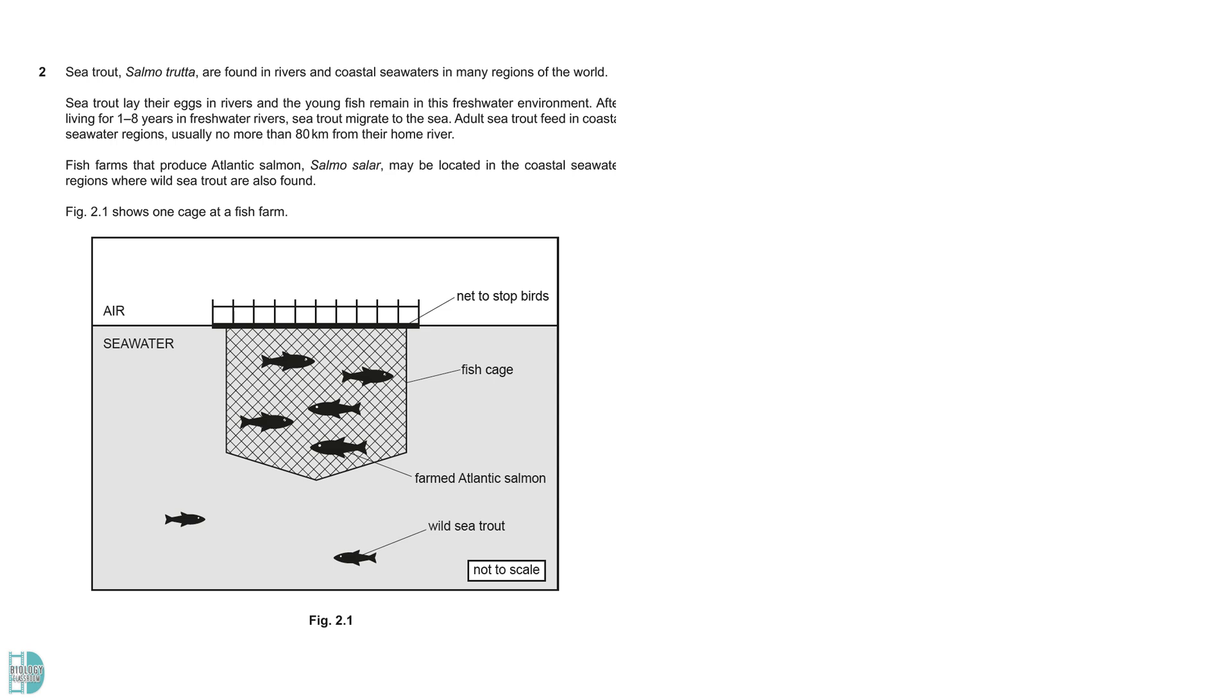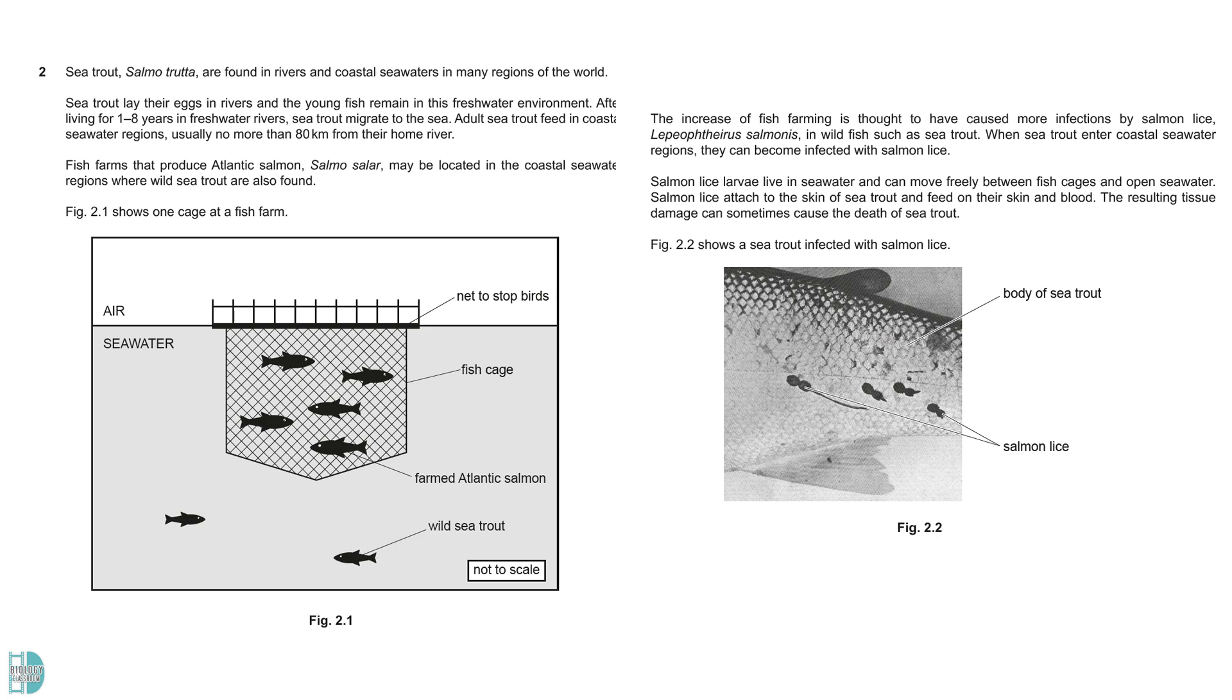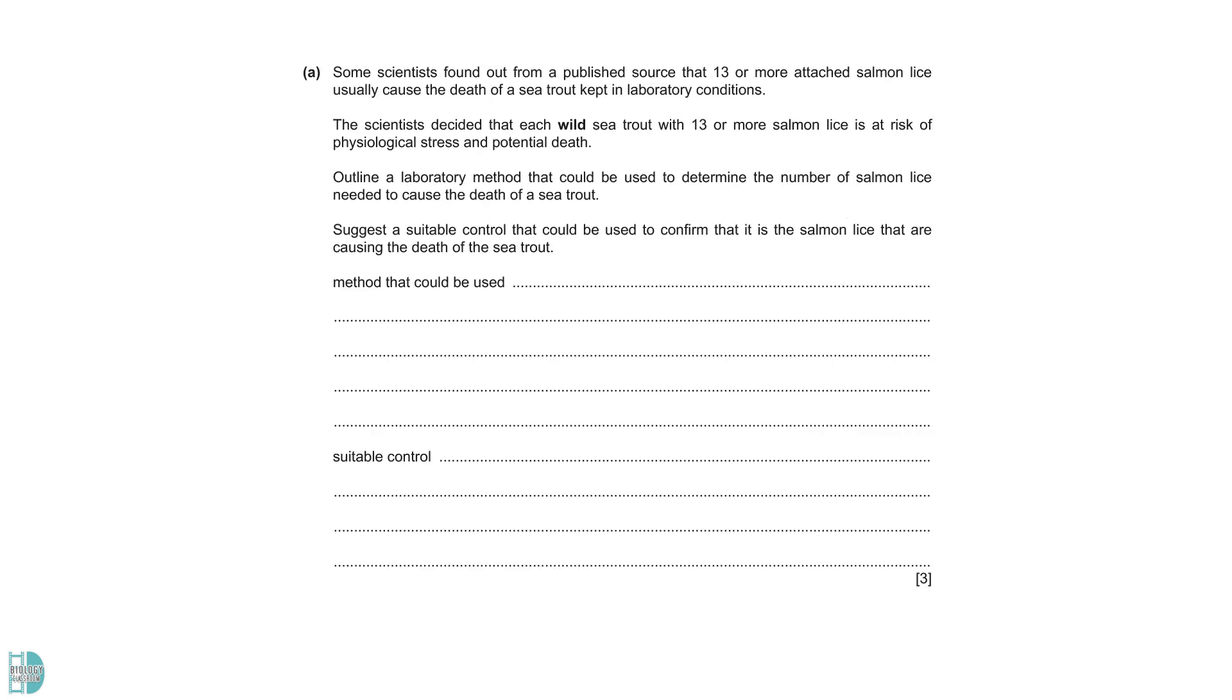Question 2 talks about the sea trout and their sea lice infections. It is believed that there is a link between the increase of fish farming and the infection. Some scientists decided that each wild sea trout with 13 or more salmon lice is at risk of physiological stress and potential death. Part A wants you to outline a method that could be used to determine the number of salmon lice needed to cause the death of a sea trout and suggest a suitable control. We can raise sea trout in a container. Then, add sea lice to the container. When a trout dies, take it out and count the number of sea lice on it.